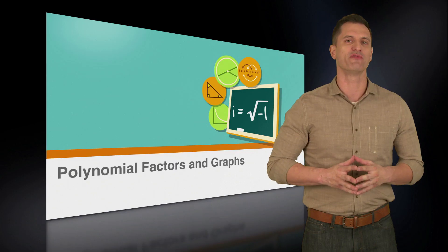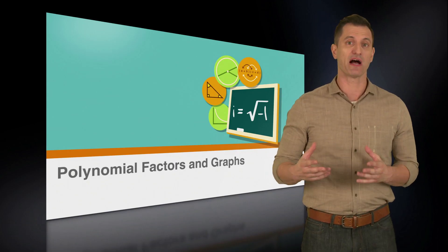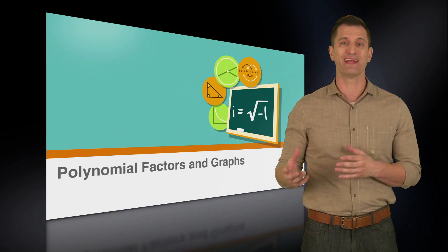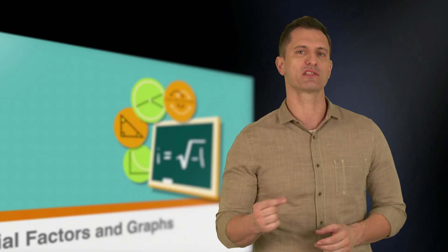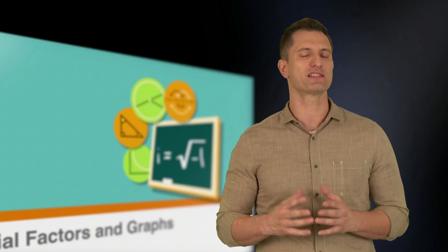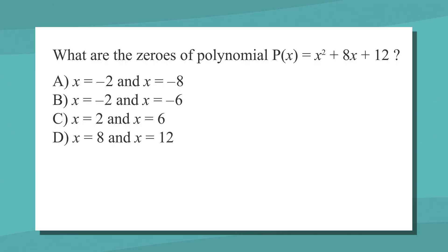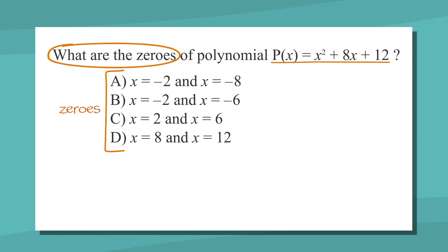Since we've now examined all the variables in this equation, we've found all the possible zeros, 2 and negative 3. Now let's look at a question similar to what you might see on the SAT. What are the zeros of polynomial p of x equals x squared plus 8x plus 12? Our answer choices each give us two options for x. As always, we'll start by underlining the facts, circling the keywords, and labeling the answer choices.